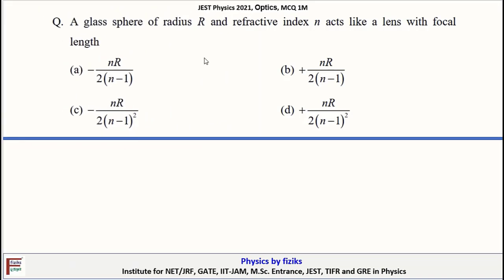We are discussing JEE Physics 2021 Optics problem. Here is one mark MCQ. Let us read the statement of this problem. A glass sphere of radius R and refractive index n acts like a lens with focal length.